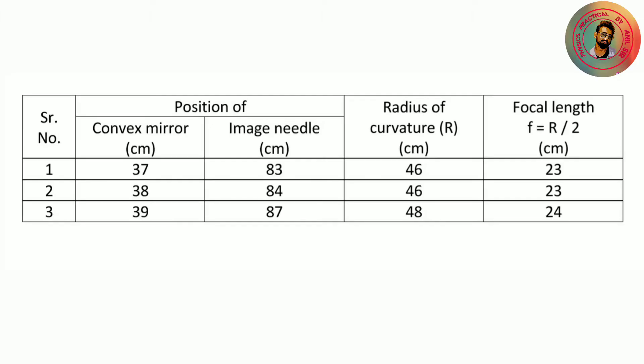Now we will see the observation table for this practical. The position of the convex mirror is 37 cm and the position of the image needle is 83 cm. To find the radius of curvature R, we subtract the mirror position from the image needle position, giving R = 46 cm. Using the focal length formula F = R/2, we get F = 23 cm. For the second and third readings we get focal lengths of 23 cm and 24 cm.